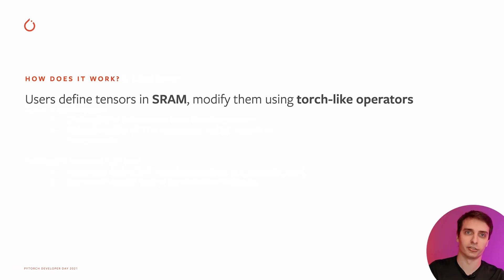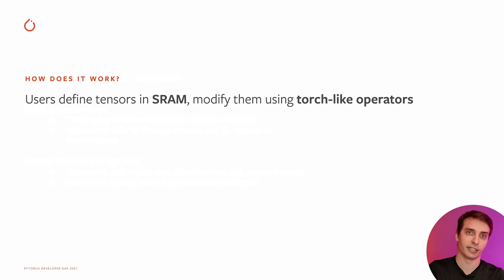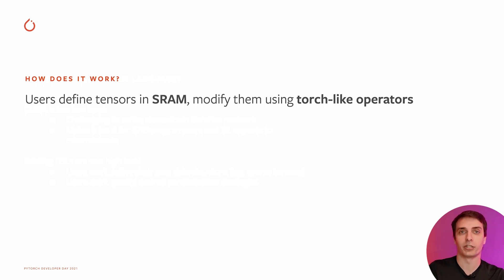So how is Triton different exactly? Triton sits a little bit between these two levels of abstraction. You still define tensors like in TVM or high-level DSLs, but instead of residing in the DRAM of your GPU, they actually reside in SRAM, like in CUDA. You can then modify these tensors using PyTorch-like operators. With this programming model, you really get the best of both worlds — machine learning experts can be very productive and use a PyTorch-like environment to program GPUs.